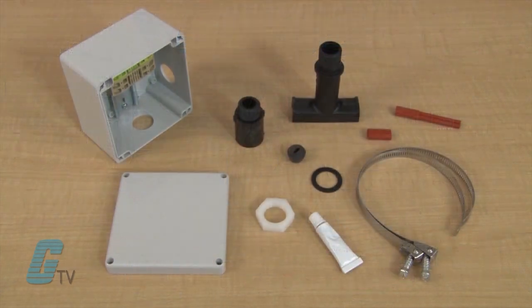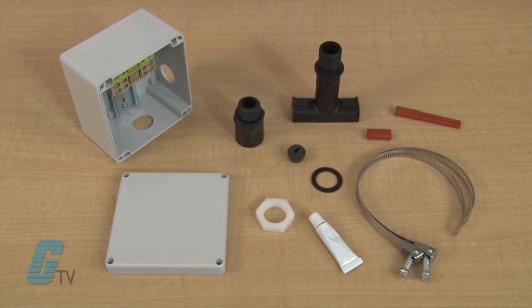This kit contains a universal base, box adapter, ceiling gasket and a lock nut. This will make up the shaft that will mount to the pipe and the junction box, which is also included in the kit.